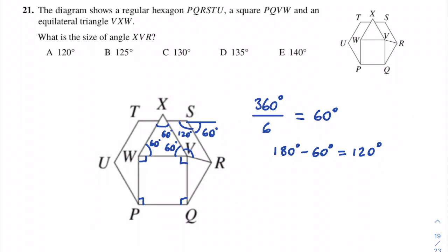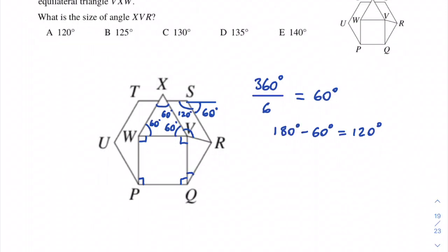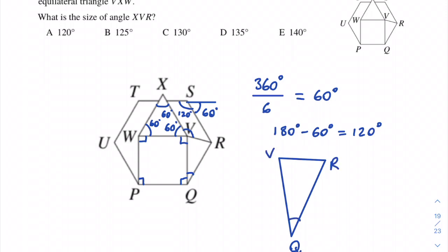We can work out the angle in triangle QVR. We know the total angle PQR is 120 degrees, and that is made up of this triangle and the right angle formed by the square. So to find this angle, we do 120 minus 90, which gives us 30 degrees.